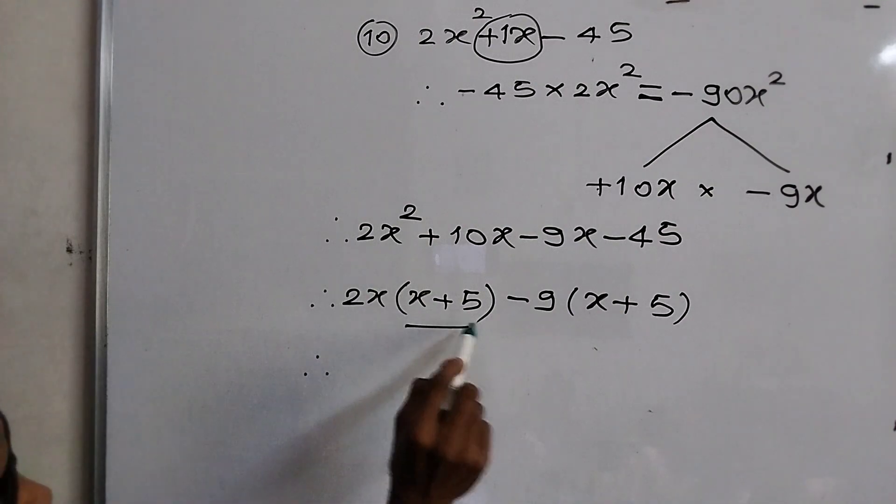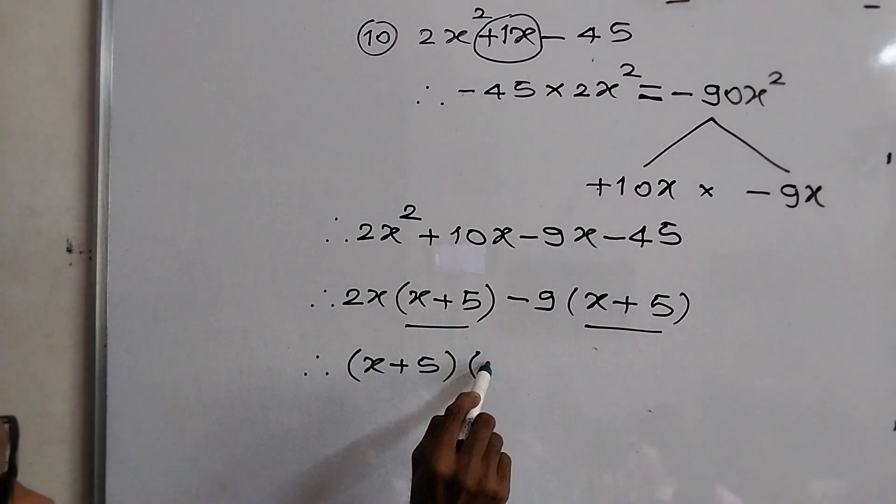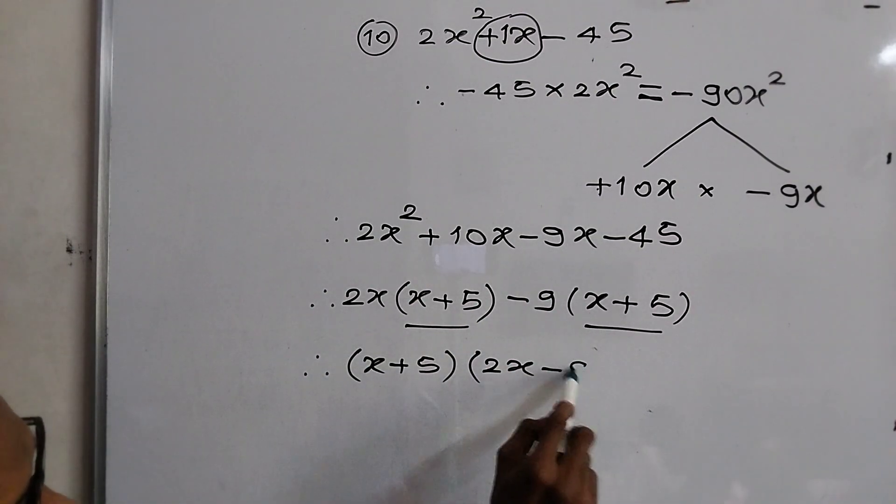Now this bracket, it's common. Bracket x plus 5, bracket complete. Okay. Bracket 2x minus 9. 2x and minus 9.